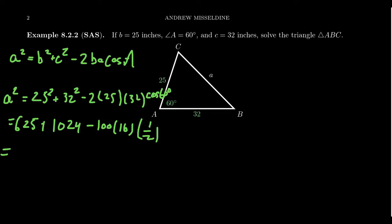So you get 625 plus 1024, that adds up together to give you 1649. And then a half of 16 is 8, 8 times 100 is 800. So we end up with 1649 minus 800. Their difference turns out to be 849, like so. That gives us a squared. To find a, we need to take the square root. So you take the square root of 849, that would be the exact value. But let's approximate that, and if we do that to one decimal place, the approximation would be 29.1 inches. And so this is the length A, like so.